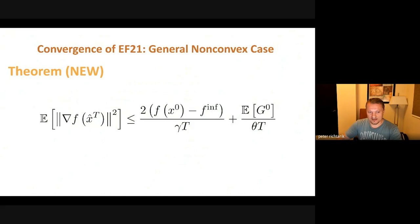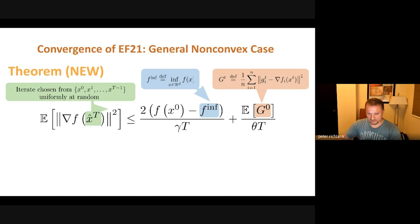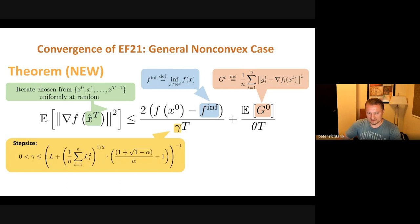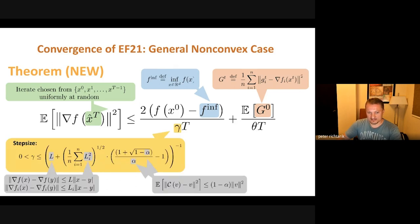In the theory, we get rate 1/t rather than 1/t^{2/3}, which is really what you get for gradient descent. And if you specialize to gradient descent — meaning the alpha parameter is just 1, giving perfect contraction — then we get exactly the rate of gradient descent. This is the first analysis of error feedback which recovers the rate of gradient descent.